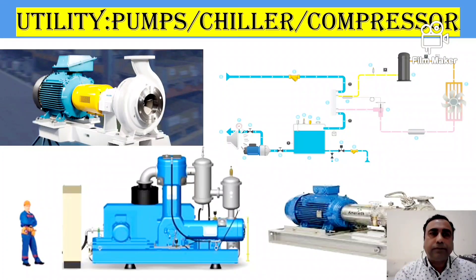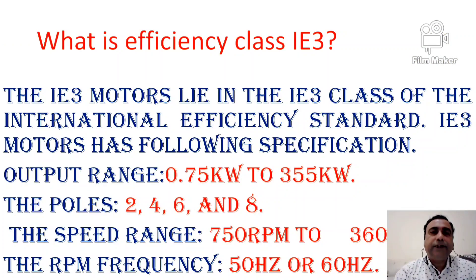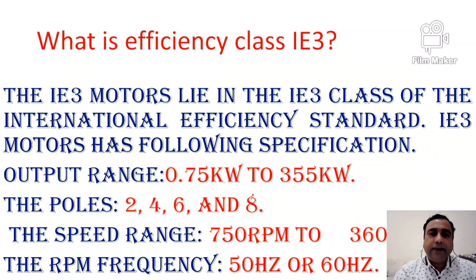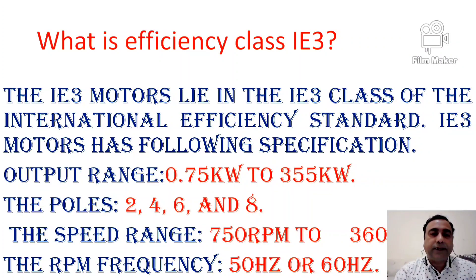The first one is efficiency class IE3. IE3 motors lie in the IE3 class of the international efficiency standard. IE3 motors have some specifications like output range 0.75 kilowatt to 355 kilowatt. As far as poles are concerned,